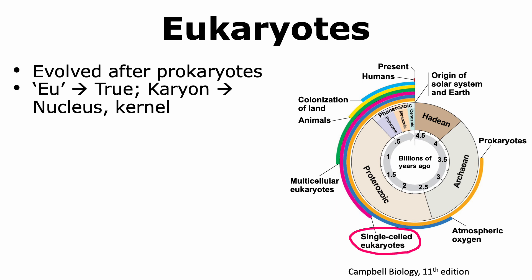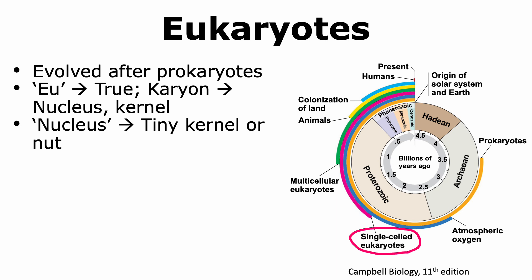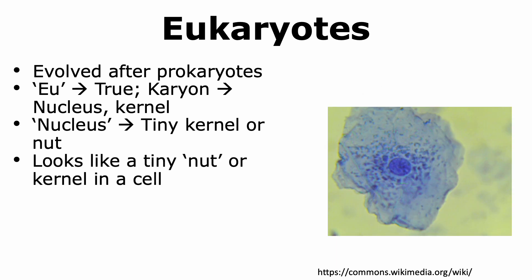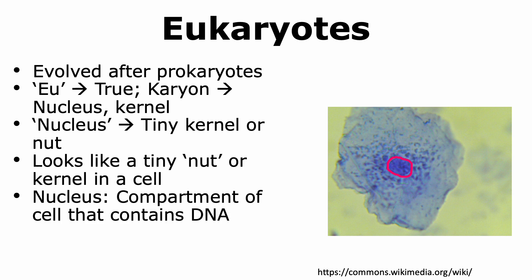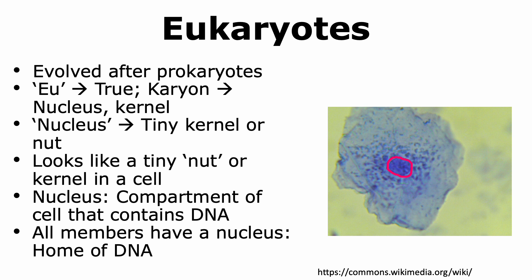The prefix 'eu' stands for true, and 'karyon' means nucleus or kernel. Nucleus itself means a tiny kernel or a nut. The reason the nucleus was named this way is because when we look at a cell and observe the nucleus, it does indeed look like a tiny nut or kernel present in the cell. The nucleus is the compartment of the cell where the DNA is present, and in the case of all eukaryotes, we observe the presence of the nucleus, which is the home of its genetic information, or DNA.